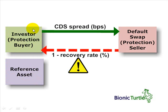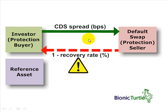If we look at the investor now — the protection buyer — what we have is a bilateral contract between these two counterparties. The default swap seller is also a counterparty. Technically, both the buyer and the seller incur some counterparty risk in the credit default swap, although the investor has greater counterparty risk. This bilateral contract means the buyer is going long, taking a long position in the default swap, or more commonly we say this investor is shorting the reference asset, because they are really transferring the credit risk over to the seller.